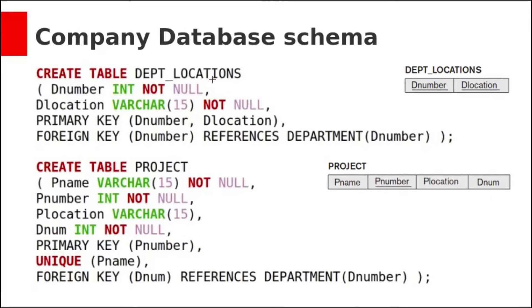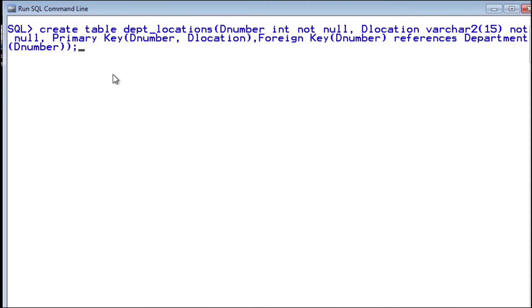Next, the department locations table. This table has two columns: dNumber and dLocation. dNumber is of type integer and not null, and dLocation of character type which is also not null. The combination of these two is the primary key — a composite primary key — defined as primary key(dNumber, dLocation). And dNumber is a foreign key referencing the department table's dNumber. Table created. The composite primary key consists of both dNumber and dLocation, and the foreign key is dNumber from the department's primary key.